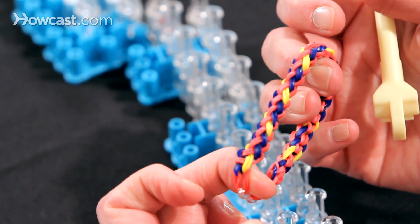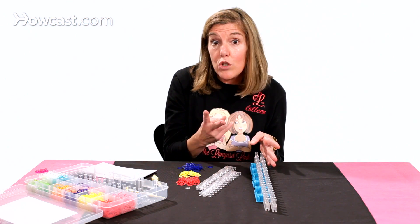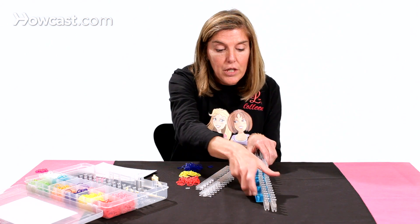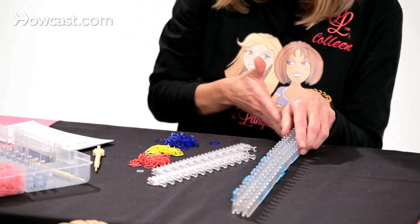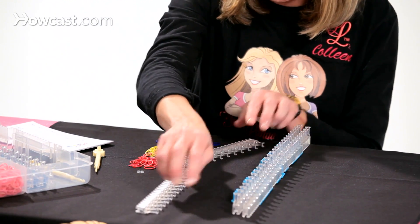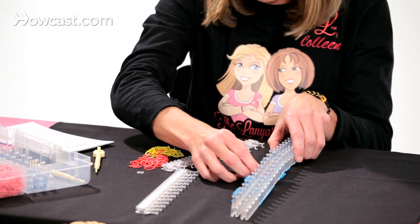To make the braid, you have to take apart your looms, and you will actually need two looms attached together. So we're going to take out the rightmost row of pins from the two looms and attach them with one of these little blue attachers.